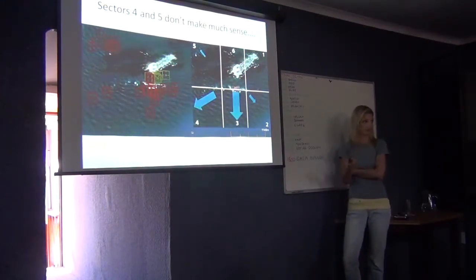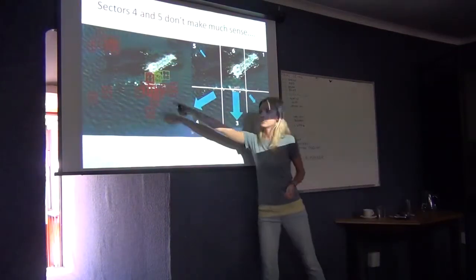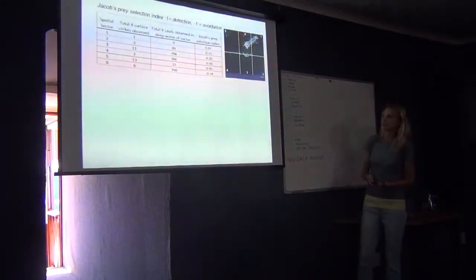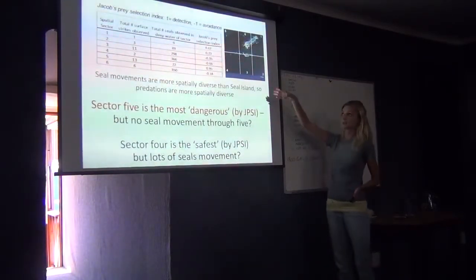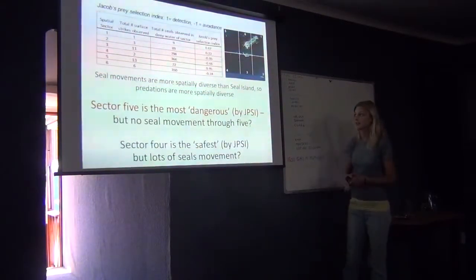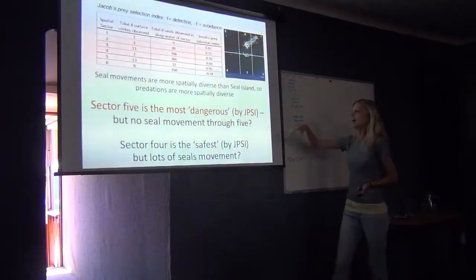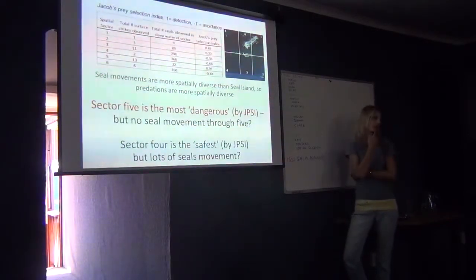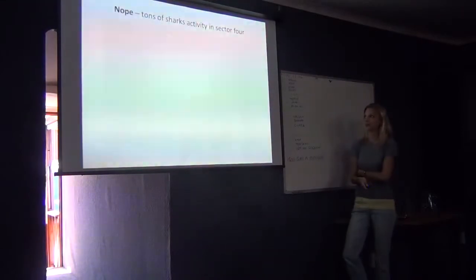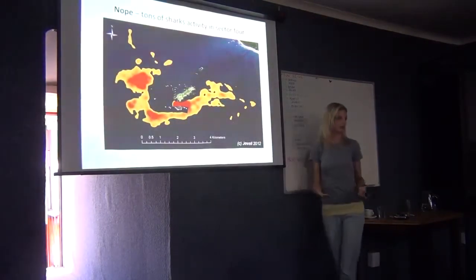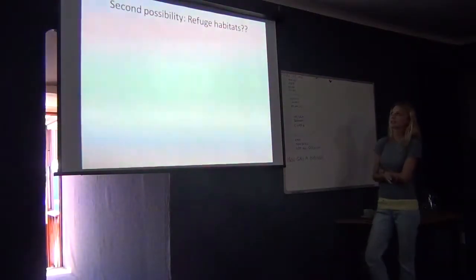So the next question you should ask yourself is, is there refuge? Because if you've got a high overlap of your predator and a high overlap of your prey, but rarely any predations happening, then there might be a refuge area in that spot. So we took a look. To highlight what I'm saying before, if you do a Jacobs' Prey Selection Index, which looks at how many surface predations are seen in comparison to your abundance of seals in the area, five's the most dangerous because I didn't see any seals through five. That's a clue. And there were lots of seals through four, but not many predations. So what could be the answer to sector four? Maybe there's no sharks in sector four. Ollie proved that wrong already. There's a ton of sharks here. They're using that area a heck of a lot. So it's definitely not that there's no sharks. They're there.